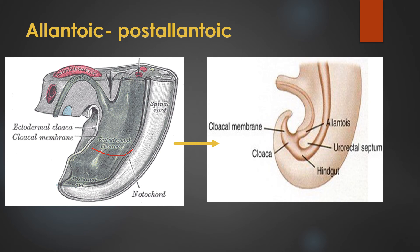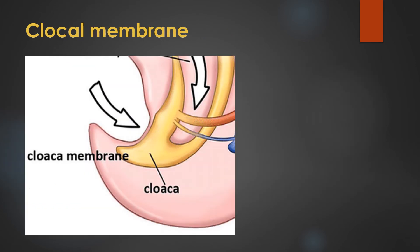This becomes the cloaca, and the structure which is shifted towards the ventral caudal part as a membrane-like structure is called the cloacal membrane. This cloacal membrane is partly formed due to the regression of the primitive streak and partly from the infraumbilical part of the ventral body. This cloacal membrane is then divided into two structures by means of a septum called the urorectal septum.